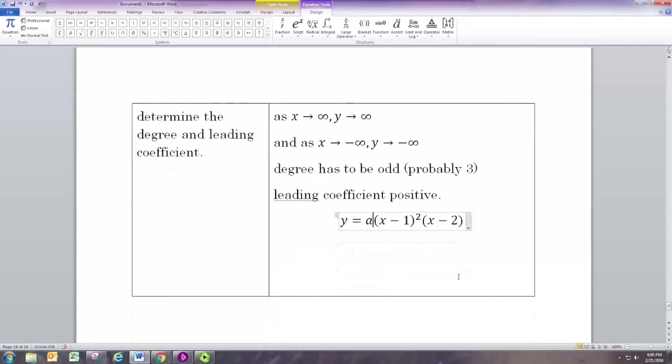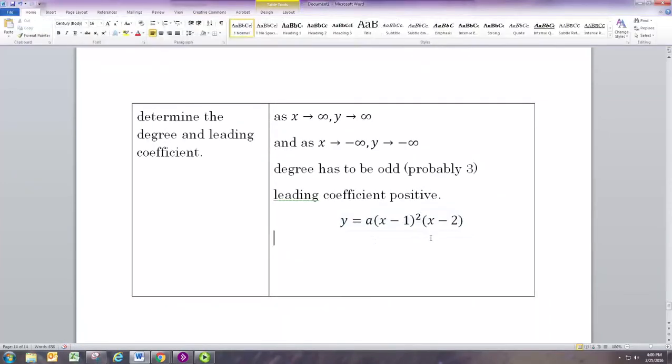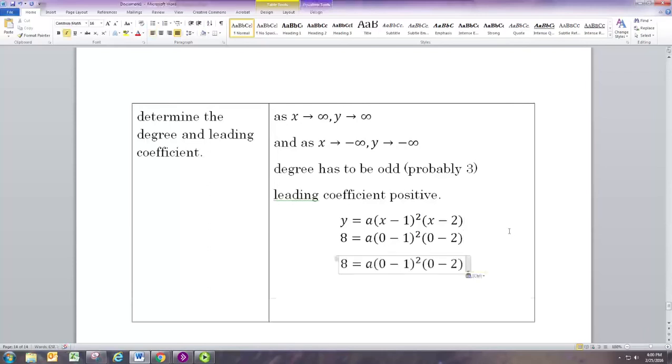We can put in the y-intercept to solve for a. You get negative 1 squared which is 1, and negative two. If you divide both sides by negative two, then you can see that a must be... [realizes error]